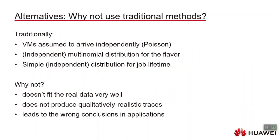Why not use traditional workload generation methods? Traditionally, jobs or virtual machines are assumed to arrive independently according to a Poisson distribution. When generating data, you would sample a flavor for each job independently from a multinomial distribution and then sample from an independent distribution for the job's lifetime. But we find this approach doesn't work very well — it doesn't fit real data, doesn't produce qualitatively realistic traces, and leads to wrong conclusions in applications like scheduling and capacity planning.